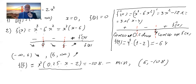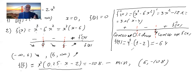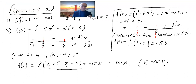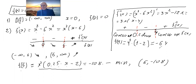A common mistake when finding the y-value for important points: you must plug into the original function, not into the derivative or second derivative. Always use the original function. So we now have the additional point (4, -64).